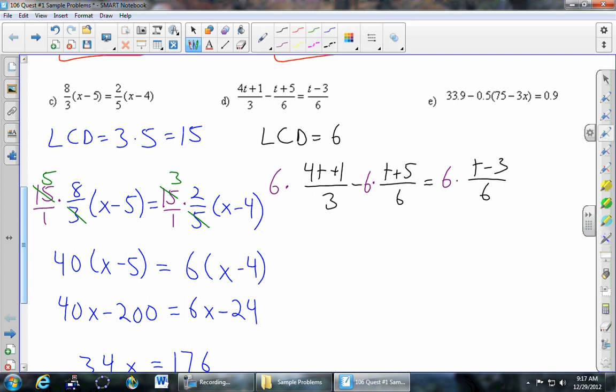So let's go ahead and cancel now. So 6 cancels with 3 and leaves me with a 2 here. 6 cancels with the 6 completely. I'll put a 1, but you don't need to put anything. And then again, 6 cancels with the 6 completely, and we'll put a 1. And so let me just rewrite what's left. There's a 2, there's a 4t plus 1, there's a minus 1 times t plus 5, and then over here 1 times t minus 3.